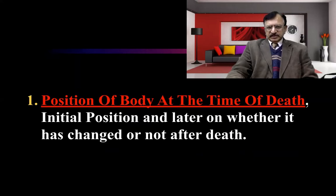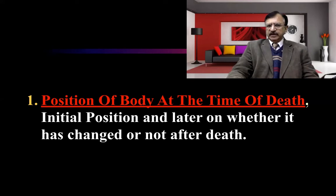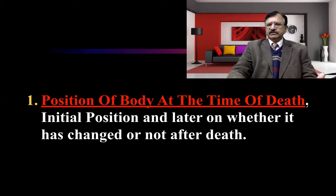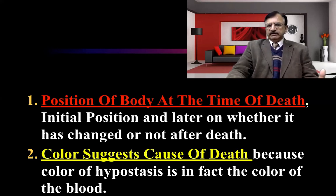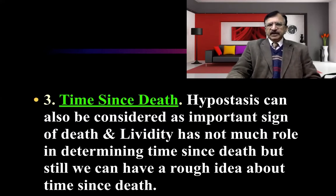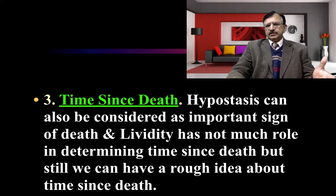The medico-legal importance: hypostasis tells us about the position of the body at the time of death, because post-mortem staining develops on the dependent region. The initial position and whether it was subsequently changed gives information about the time of death and fixation. The color also suggests certain causes of death, as discussed with various poisons and diseases. Additionally, hypostasis helps in estimating the time since death, because we know the timeline of its appearance and fixation.